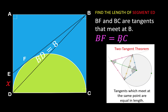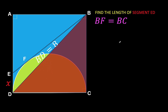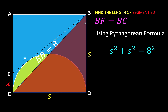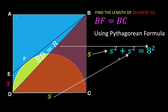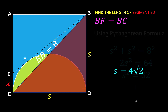To find the value of side BC, we use the Pythagorean formula on right triangle BCD. Let S be the side length of the square — the two legs of this isosceles right triangle. We know the hypotenuse equals the diagonal, so S² + S² = 8², giving 2S² = 64, S² = 32, and S = 4√2.